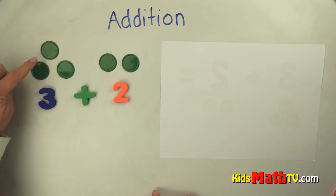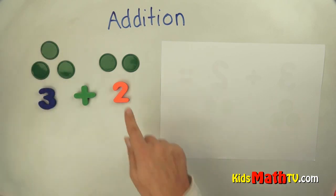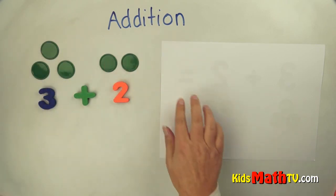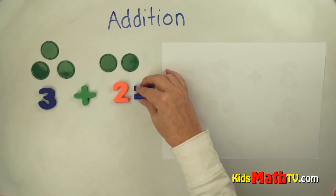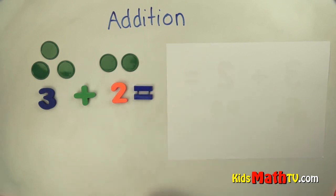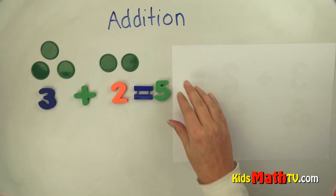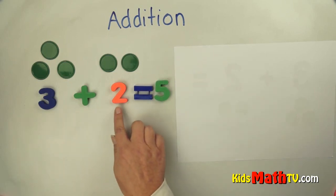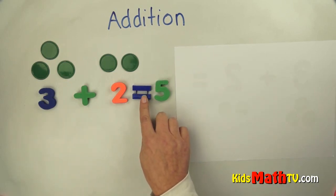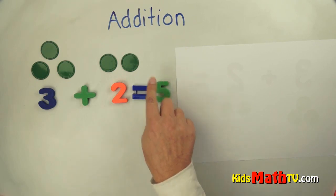If I put them together, I add the two and the three. Let's count how many all together. One, two, three, four, five. There are five. There's the equals. That means how many there are. Five. Three plus two equals, or is, five altogether.